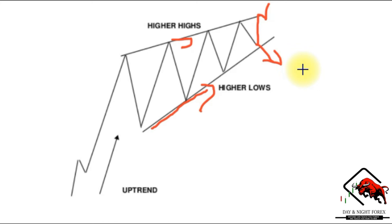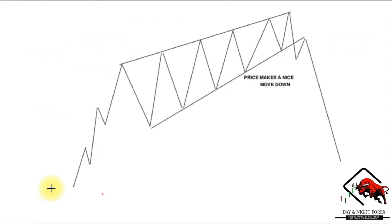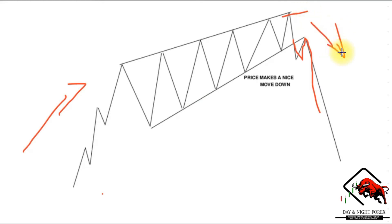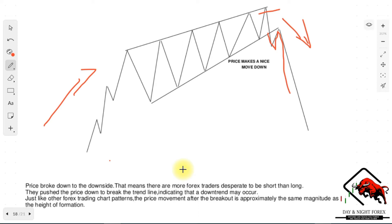A rising wedge formed at the end of an uptrend — notice how the price action is forming new highs but at a much slower pace than when price makes higher lows. Price made a nice move downward, broke through, came back for a retest, and then fell to the downside — a bearish reversal pattern. The uptrend ended and the bearish trend took over, with bears taking control of the market from the bulls.